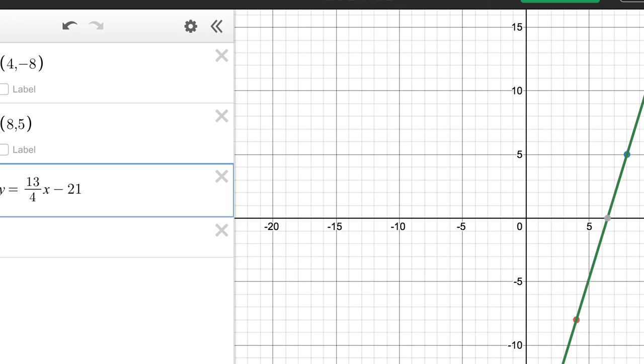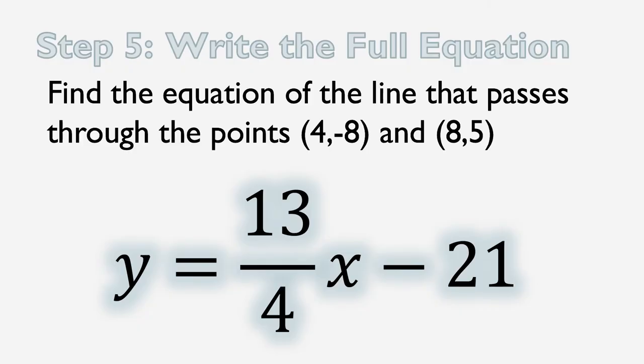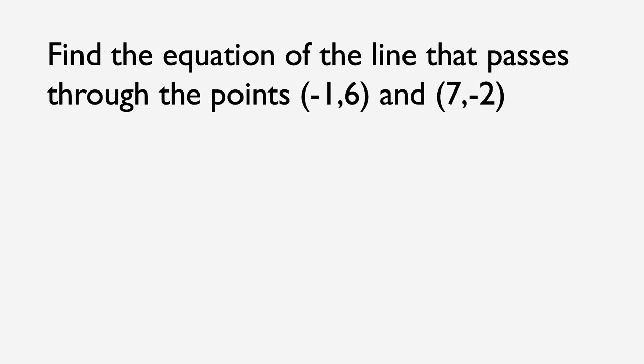So let's take a look at one more example. And we won't graph this one, we'll just do it pure algebra. Find the equation of the line that passes through the points negative 1, 6, and 7, negative 2.